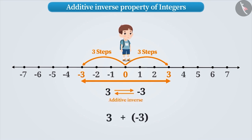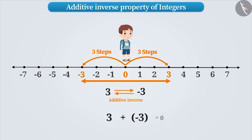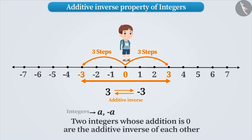Now think: what will be the result of adding such numbers? The addition of such numbers is 0. Therefore, we can say that two integers, a and minus a, whose addition is 0, are the additive inverse of each other.